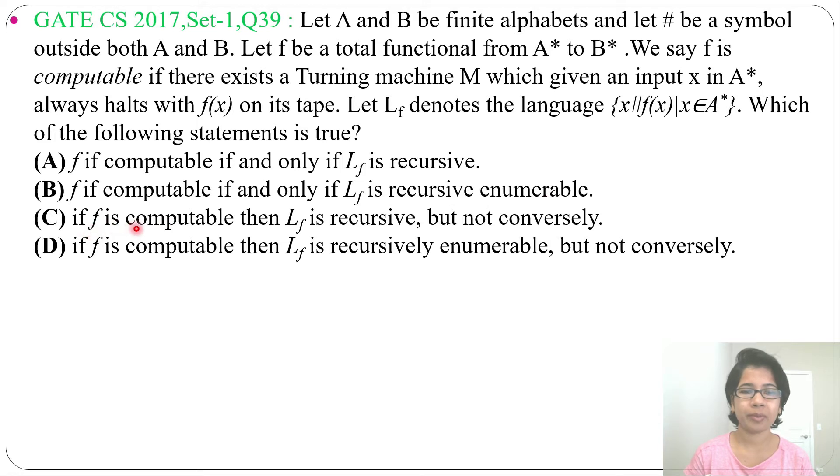Option C: if f is computable then L_f is recursive but not conversely. Option D: if f is computable then L_f is recursively enumerable but not conversely.